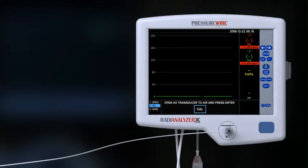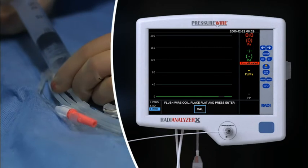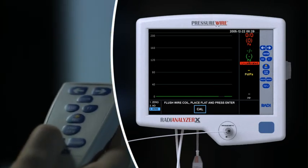Open the AO transducer to air, then press ENTER. Flush the wire coil, place it flat, and press ENTER.